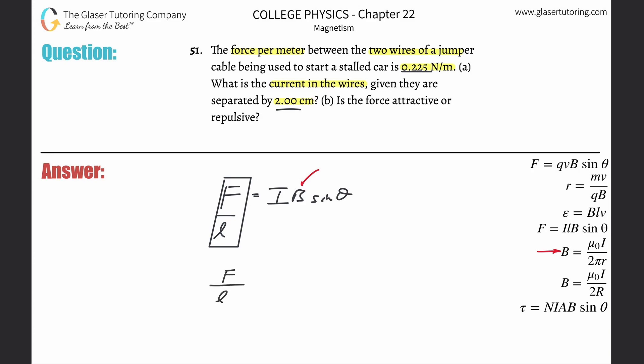So it's now going to be force over length is equal to the current multiplied now by the permeability of free space, mu sub 0, times the current, all divided by 2 pi times the distance between the wires, which is R, then multiplied by sine of theta. They don't tell me anything about the angle, so I'll assume it's 90. So basically, this will just go to 1. So that can cancel.